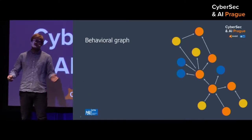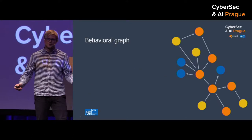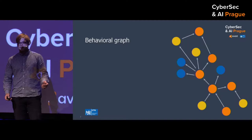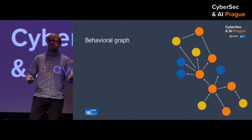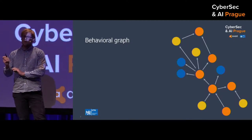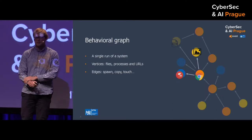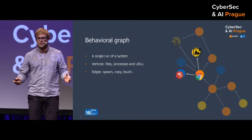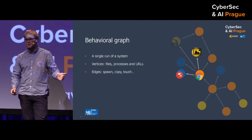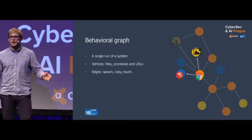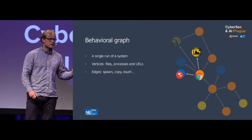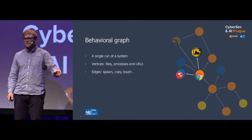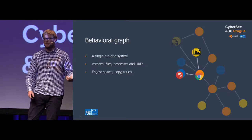Let's start with a graph. A graph is a structure with two sets: a set of nodes or vertices, and a set of edges that usually depict a certain relationship between those vertices. What we represent with that structure in Avast is the run of a system, usually a computer. Those nodes depict processes, files, URLs, and on edges you can see that a process tried to reach for a URL, that it tried to copy a file, that it tried to spawn a new process, and so on.